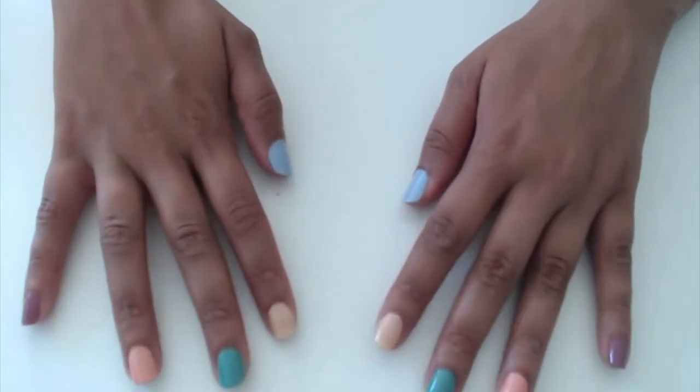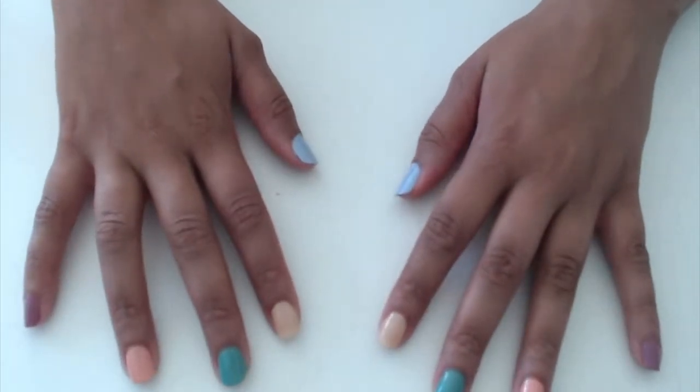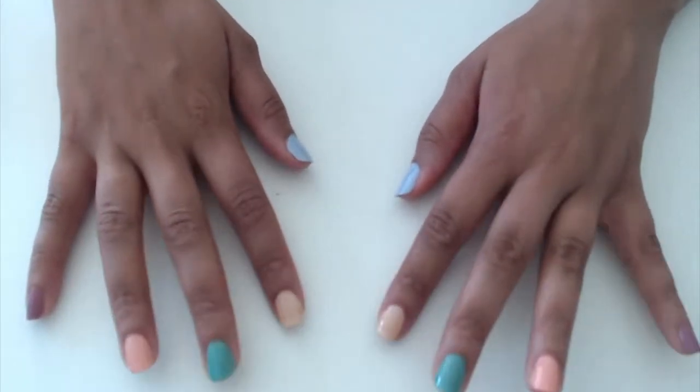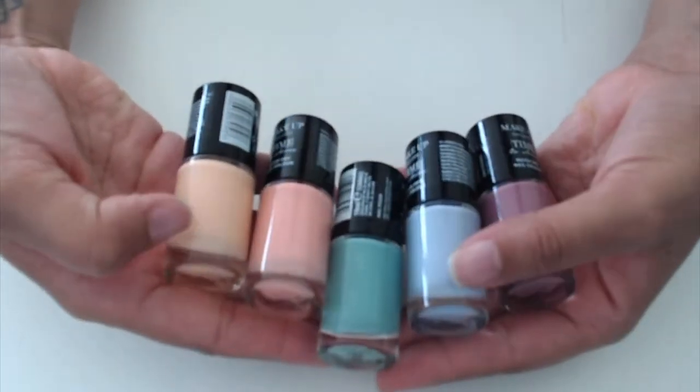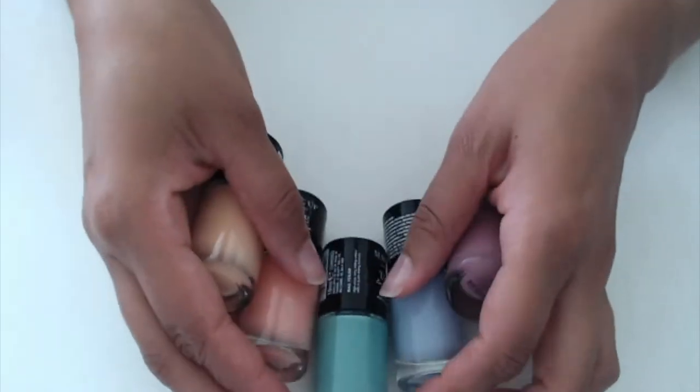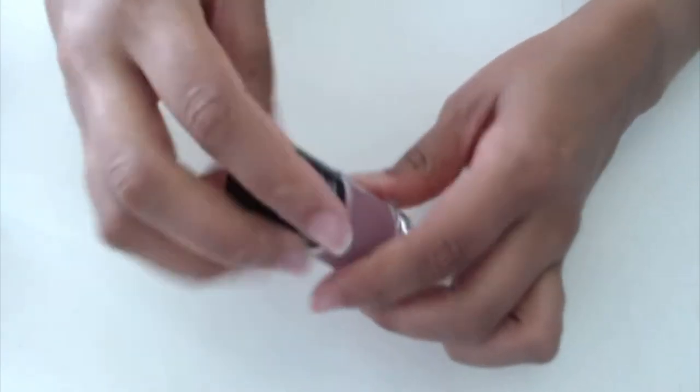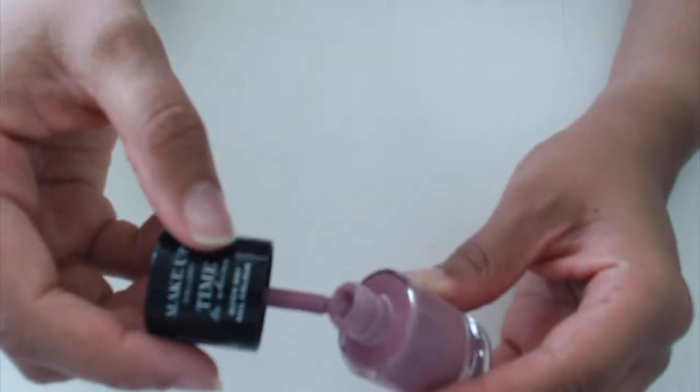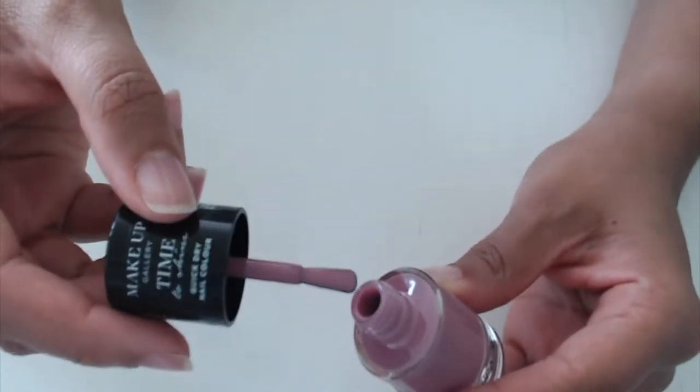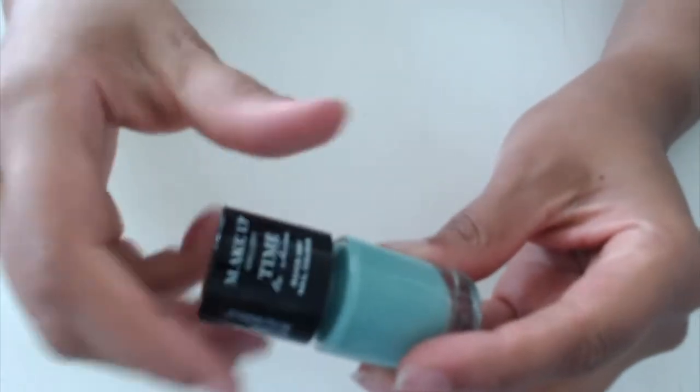Hi everyone, welcome back to This January Girl. Today we are painting our nails pastel with these nail vanishes, and you'll never guess where they're from. First up we have Blush Rose number 48, and it is beautiful.